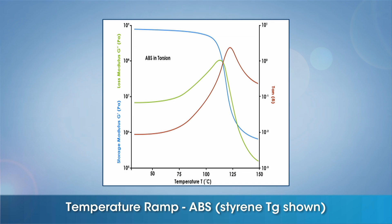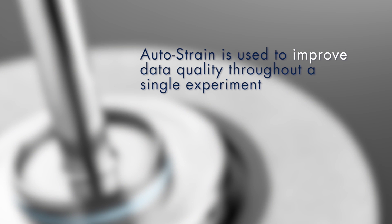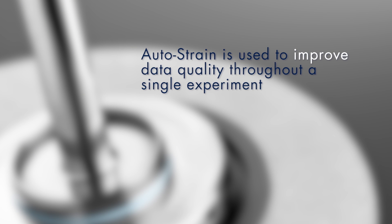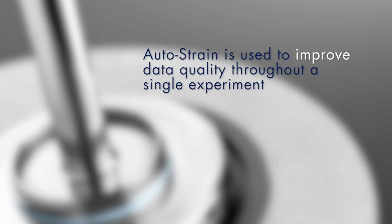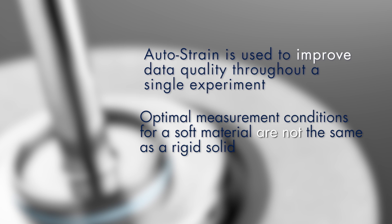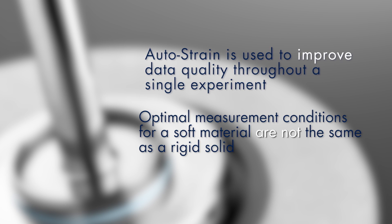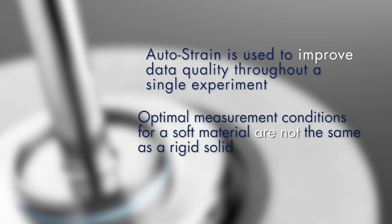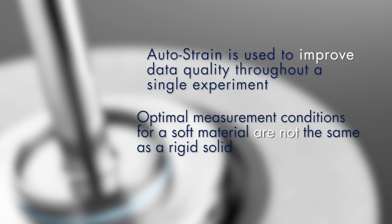The Auto Strain function works by automatically adjusting the strain amplitude during an oscillation experiment in order to maintain the measured torque within a given torque window. In more simple terms, Auto Strain is used to improve data quality throughout a single experiment, since optimal measurement conditions for a soft material are not the same as for a rigid solid.